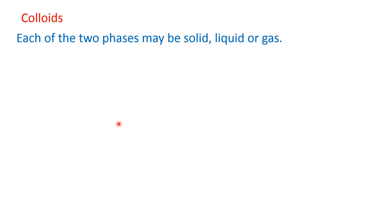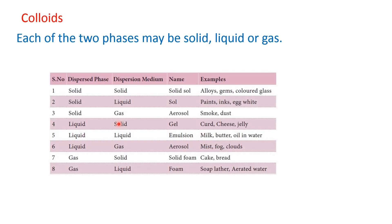Each of the two phases of a colloidal solution may be solid, liquid, or gas. When dispersed phase is solid and dispersion medium is also solid, the colloidal solution is called solid sol — examples: alloys, gems, colored glass. When dispersed phase is solid and dispersion medium is liquid, it is called sol — like paints, inks, egg white. When dispersed phase is solid and dispersion medium is gas, it is aerosol — like smoke, dust.